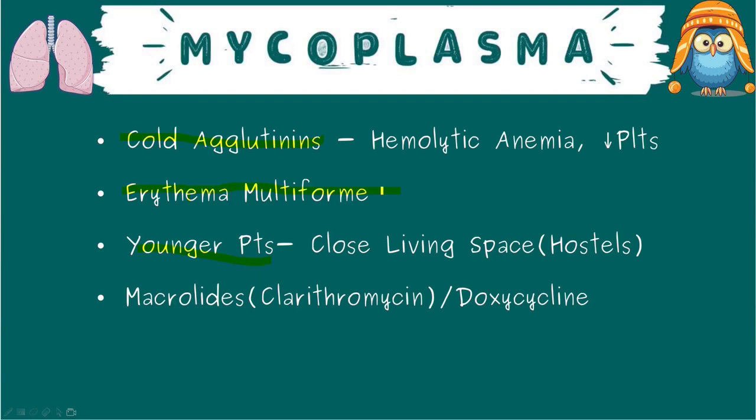Diagnosis is usually via serology and PCR, or when the Gram stain comes back negative for bacteria while the MCQ shows a positive Coombs test. Atypical pneumonias are important to diagnose correctly as they do not respond to penicillins or cephalosporins — you need to add macrolides such as clarithromycin or doxycycline. The lack of a cell wall makes Mycoplasma susceptible to macrolides and tetracyclines.